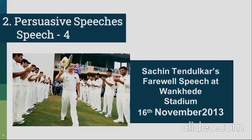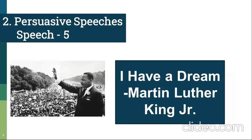Speech number five is the very famous 'I Have a Dream' by Martin Luther King Jr. In this speech, Martin Luther King Jr. describes the foundational promises of America — freedom, equality, and justice for all — and the nation's failure to keep those promises, particularly to Black Americans. He addressed thousands of people at the March on Washington in August 1963.